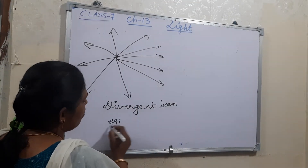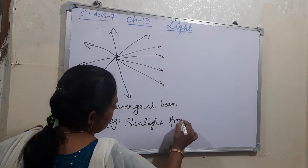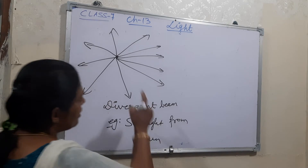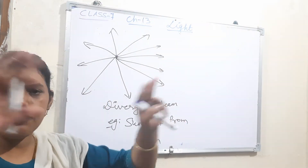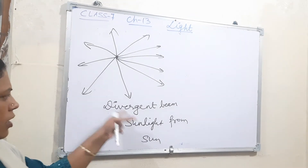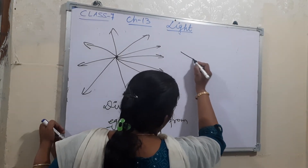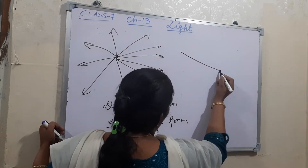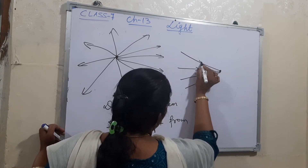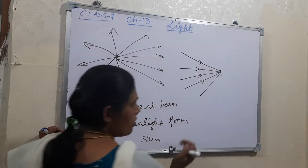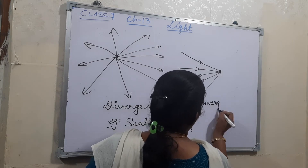If the number of rays are coming from different directions and meeting towards a point — meeting at a point from different directions — then that is known as a convergent beam of light.